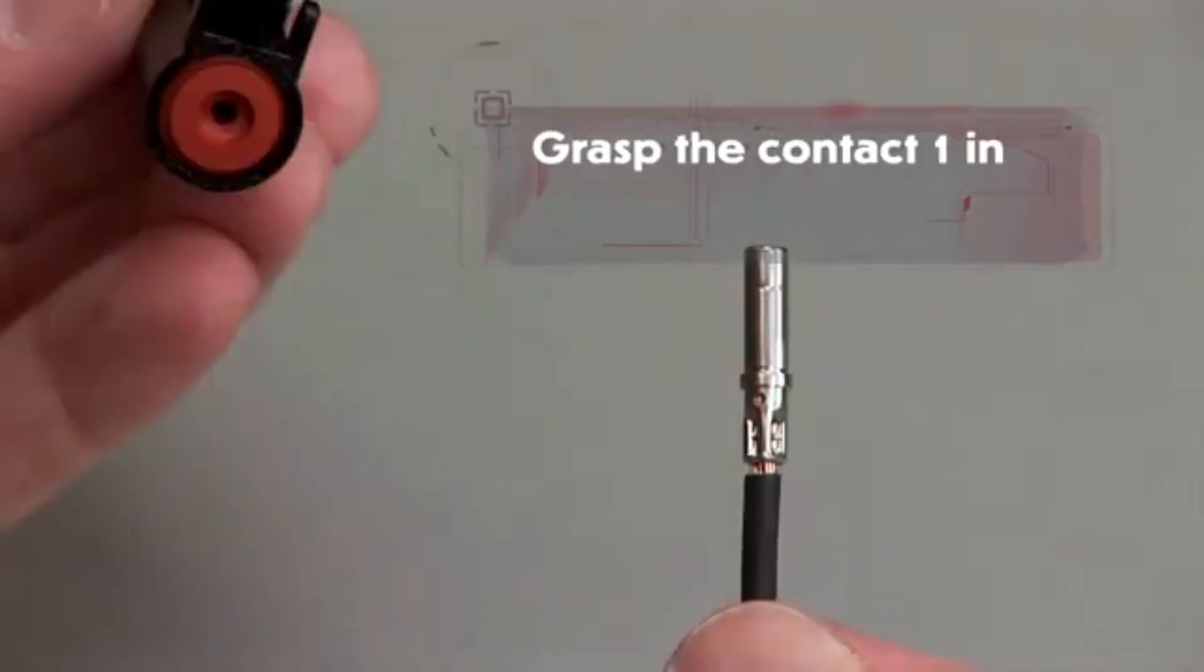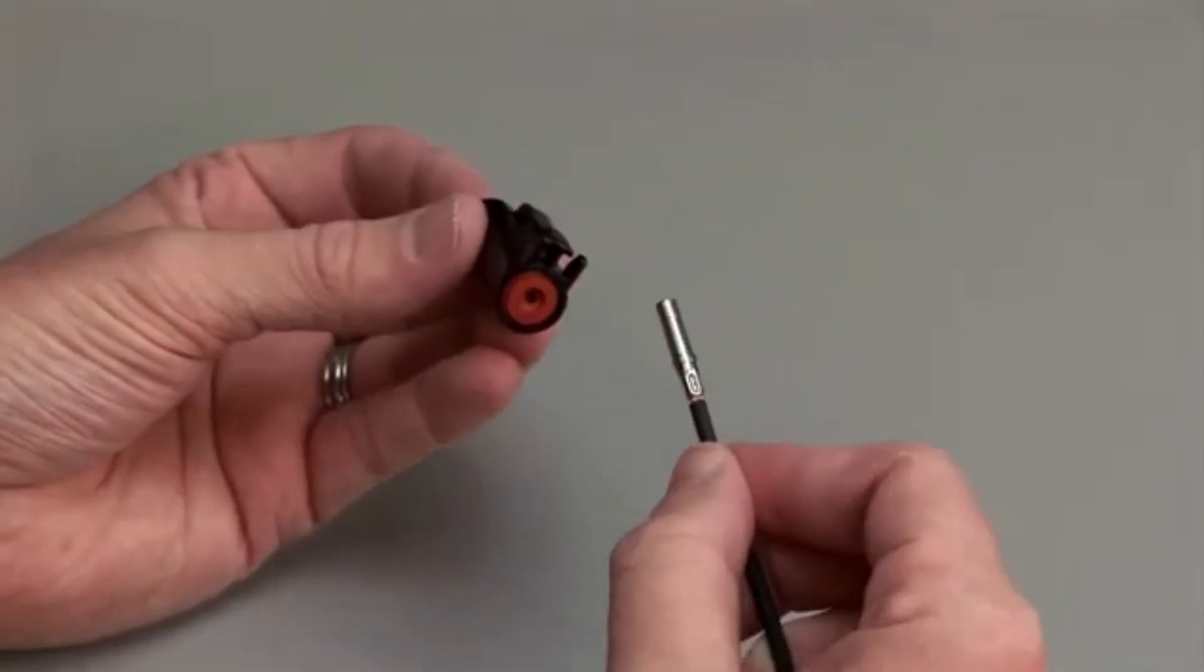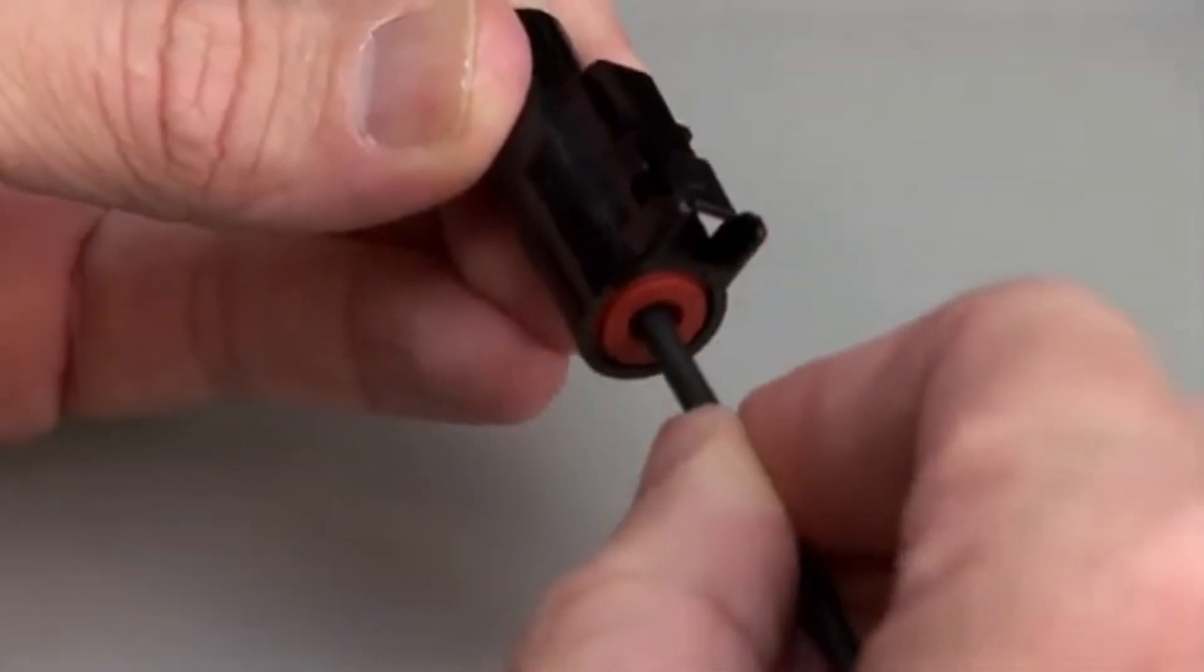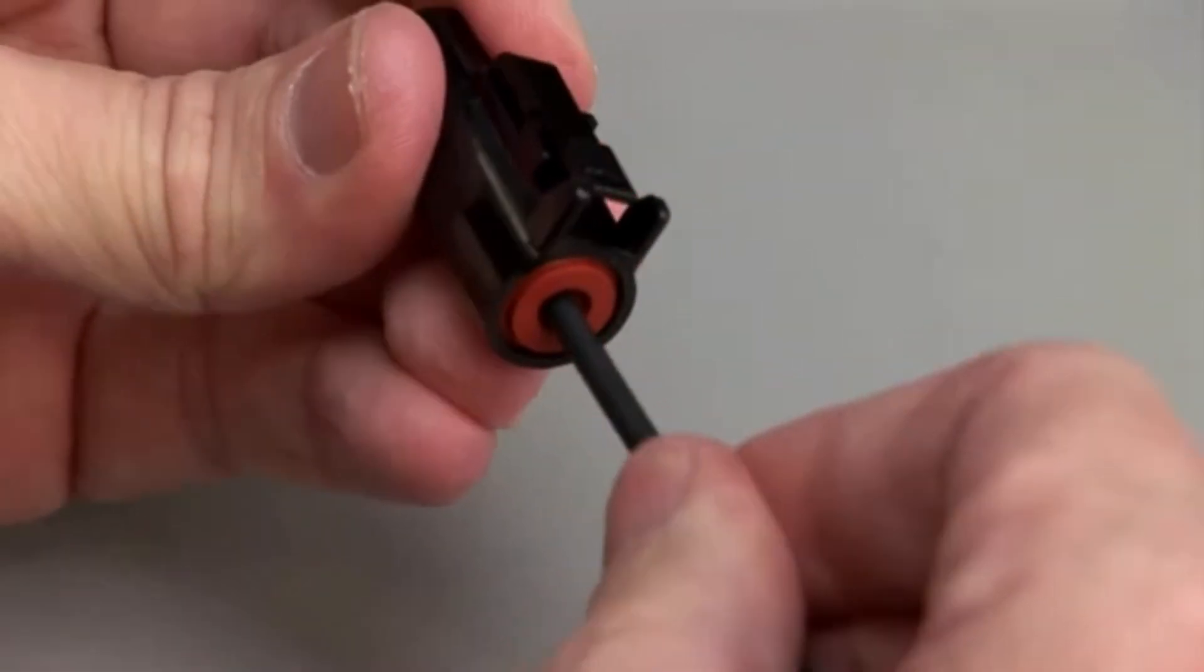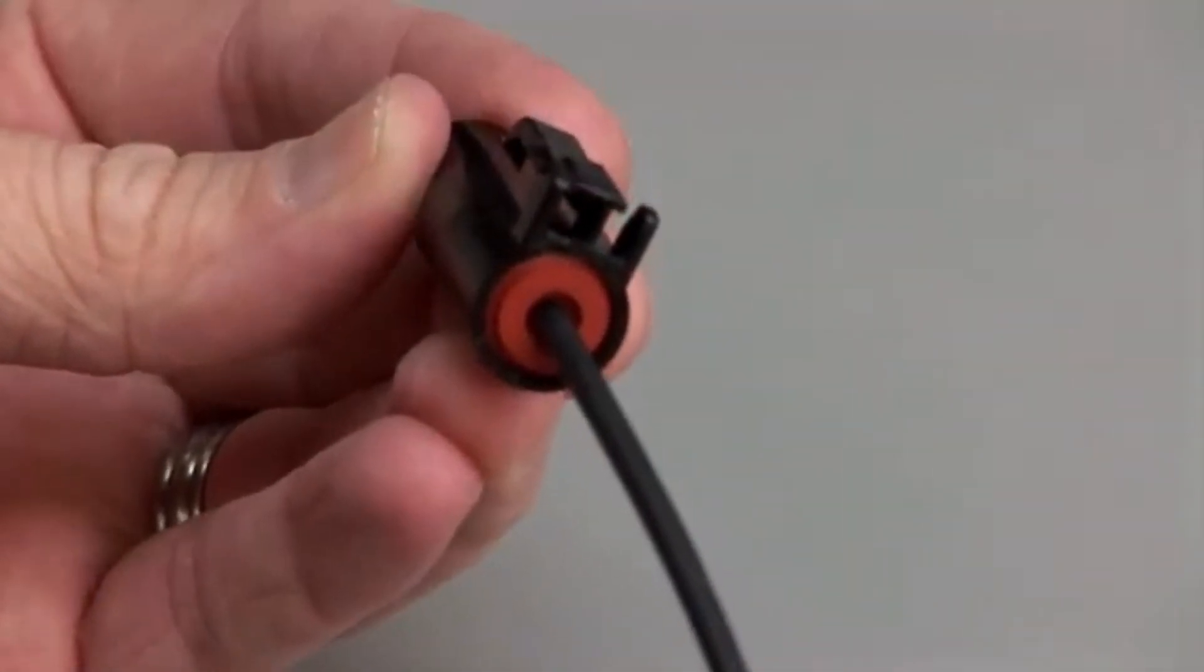Grasp the crimped contact approximately 1 inch behind the contact barrel. Hold the connector with the rear grommet facing you. Push the contact straight into the rear grommet until you hear and feel a click. A slight tug will confirm that the contact is properly locked into place.